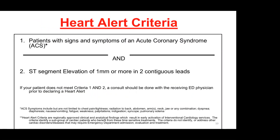Our current STRAC heart alert criteria — this was put out several years ago and hasn't changed very much. The first criteria is the patient has to have signs and symptoms of an acute coronary syndrome, including but not limited to chest pain, tightness, radiation to the arms, neck, jaw, dyspnea, nausea, vomiting, weakness, palpitations, indigestion, syncope, or pulmonary edema. They also need ST segment elevation of one millimeter or more in two contiguous leads. If the patient does not meet criteria one and two, a consult should be done prior to declaring a heart alert.